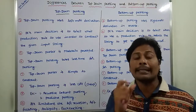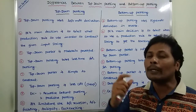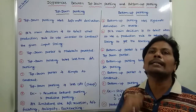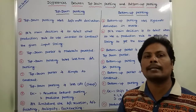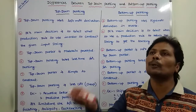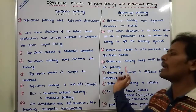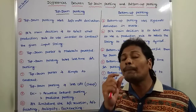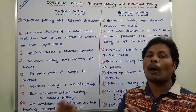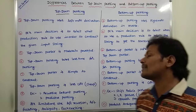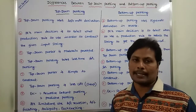Top-down parsing takes less time for parsing — to get the given input string from the starting symbol of the given grammar. Whereas in the case of bottom-up parsing, to get the starting symbol from the given input string, it takes more time compared to top-down parsing. Also, top-down parser is simple to construct, whereas bottom-up parsing is very difficult to construct.